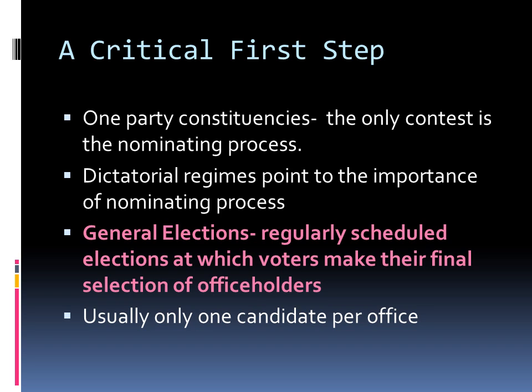And those candidates regularly win with majorities approaching 100%. There are five ways in which nominations are made in the United States, and tonight and tomorrow night we will be looking at those. They include self-announcement, caucus, conventions, the direct primary, and the petition.